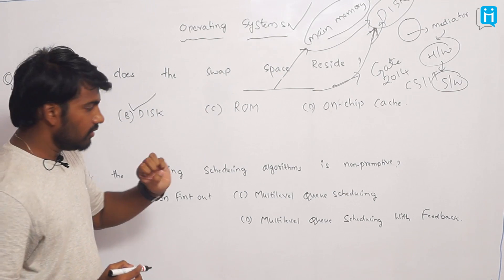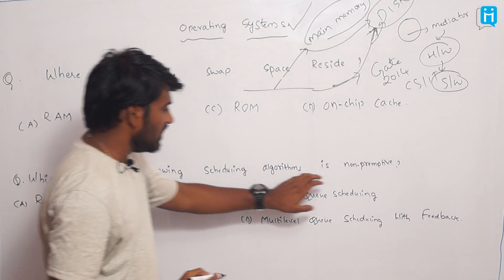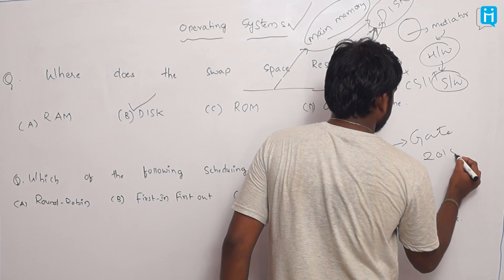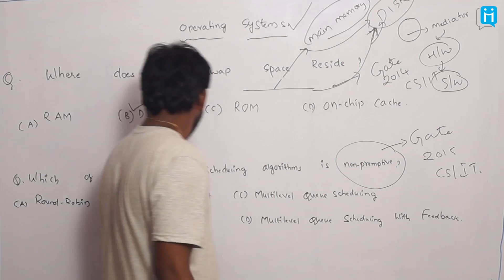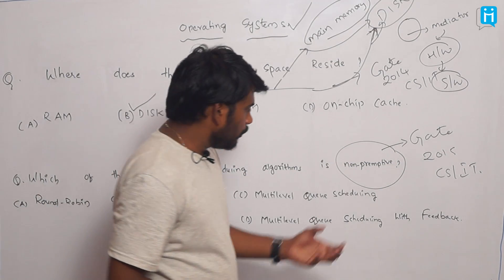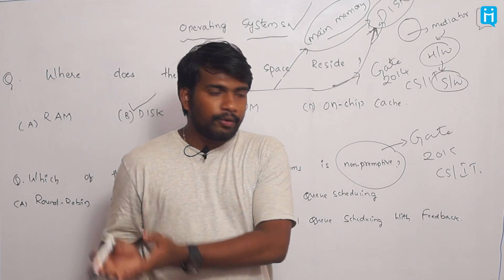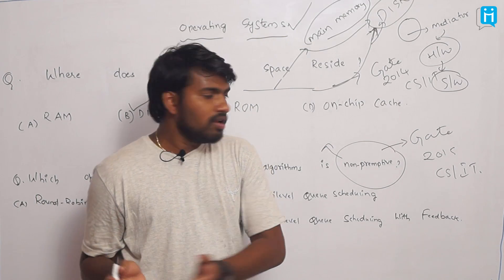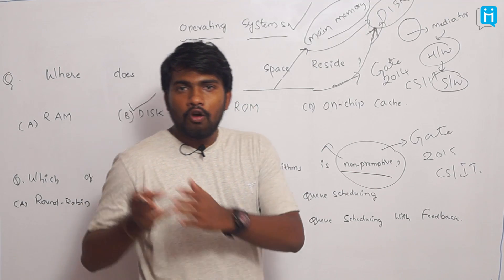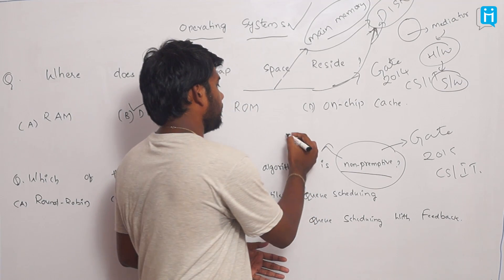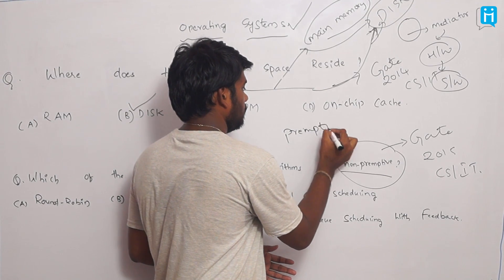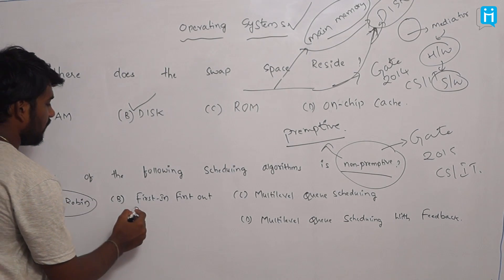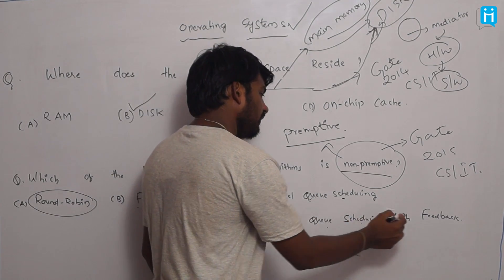The next question: which of the following scheduling algorithms is non-preemptive? This question has been asked in GATE 2015 Computer Science and IT. When we talk about non-preemptive and preemptive, if we assign priorities to our processes we call it non-preemptive; if there are no particular priorities, we call it preemptive. The options are: Round Robin, First In First Out, Multi-level Queue Scheduling, and Multi-level Queue Scheduling with Feedback.